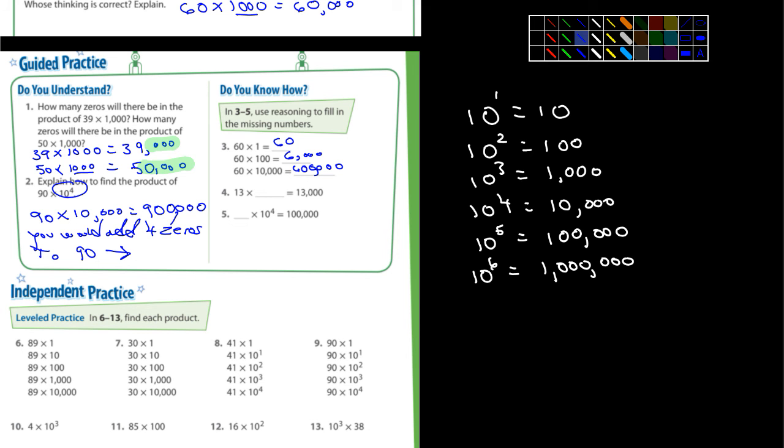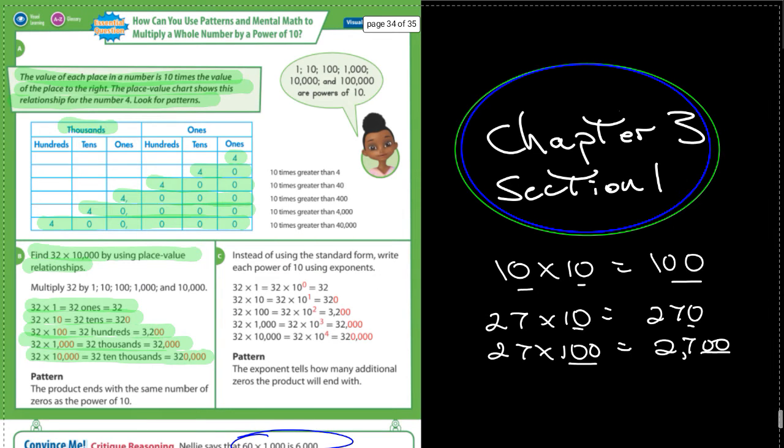Look at number four here. It says 13 times something equals 13,000. Mr. Eberhardt, what times 13 would equal 13,000? 1,000. Nicely done. And then something times 10 to the fourth equals 100,000. Mr. Camisa? Yeah, 10, and then you would just add four zeros.